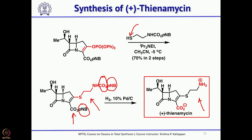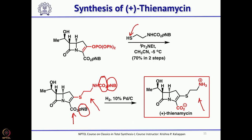They then wanted to develop a scalable method and so developed a racemic synthesis of thienamycin. They started with a commercially available beta-ketoester having two ester groups.